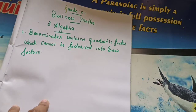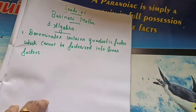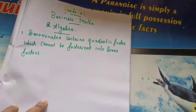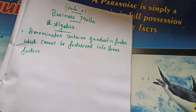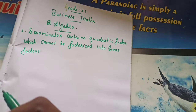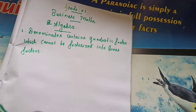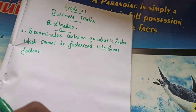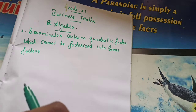Hi students, good morning. Welcome to Grade 11 Business Mathematics class. Now we are learning our second chapter, Algebra. Last class I explained Type 2 in partial fractions, that is denominator containing repeated linear factors. First type we learned previously is denominator containing non-repeated linear factors. I already explained the third type: denominator contains a quadratic factor which cannot be factorized into linear factors. So let's start directly to the question and I will explain it.